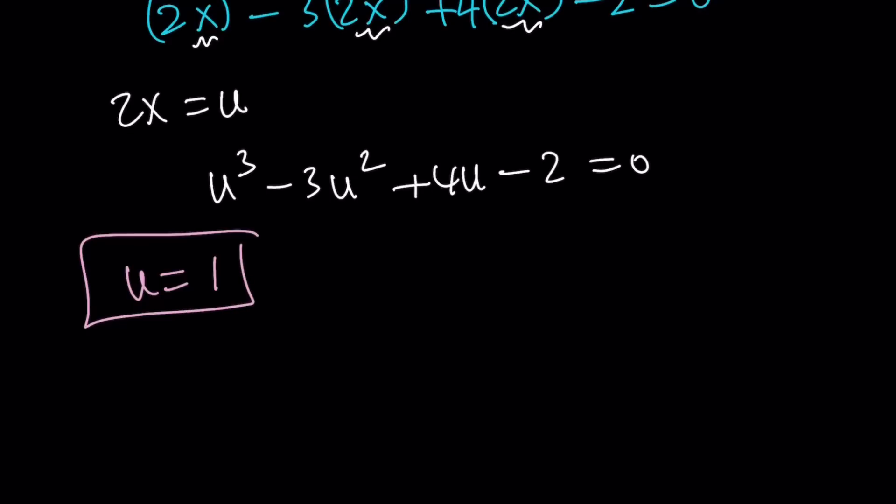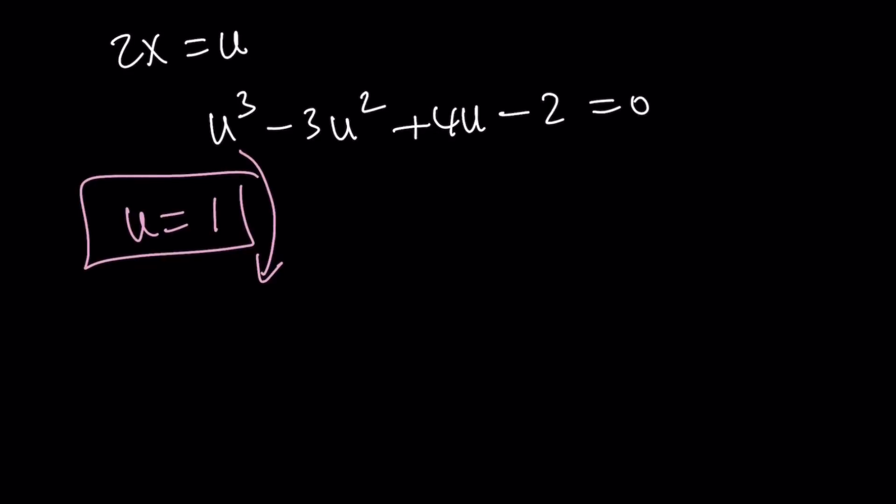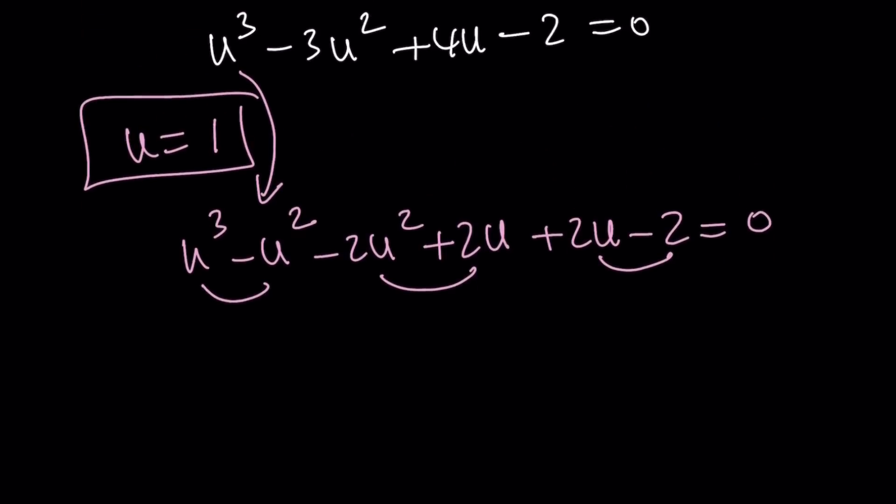Which is really cool because then we're going to end up with a quadratic. Let's go ahead and manipulate the coefficients here to make u minus 1 a factor. So like this, u³ - u² - 2u² and then I'm going to continue with plus 2u because notice that these terms will have a common factor of u minus 1.